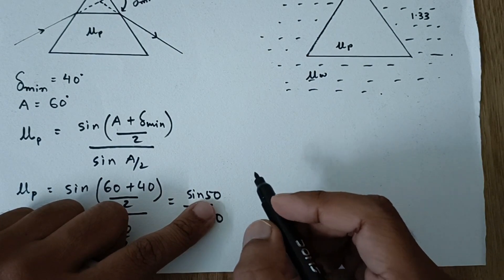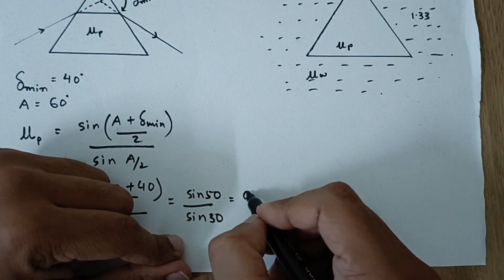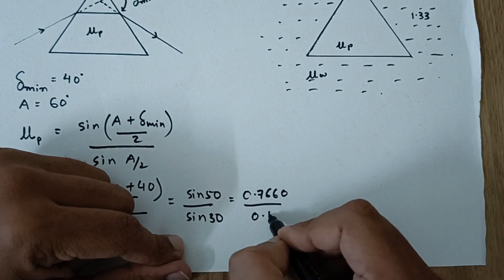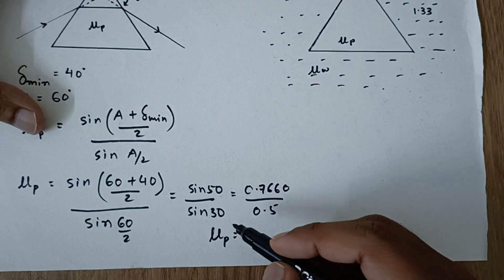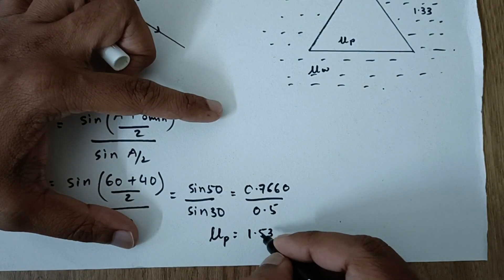Now the value of sin 50, you will have to use the natural signs and you can easily find it out that it is equal to 0.7660, and this is 0.5, sin 30 is half. So if you solve this, you will get the refractive index of the prism in air and that will be 1.53.